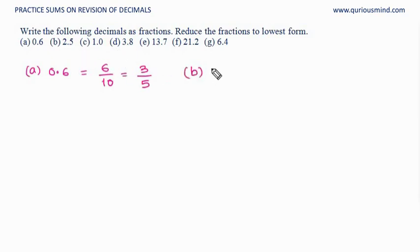B. 2.5 means 2 whole and 5 in the 10th place, so 5 tenths. Converting it into improper fraction, 10 twos are 20, 20 plus 5 is 25. 25 upon 10. We see a common factor 5 between them. If we divide both numerator and denominator by 5, we get 5 by 2. That is our answer.